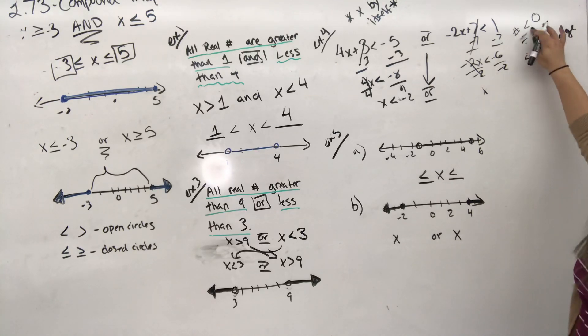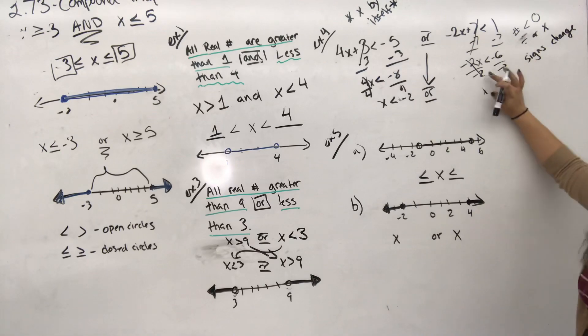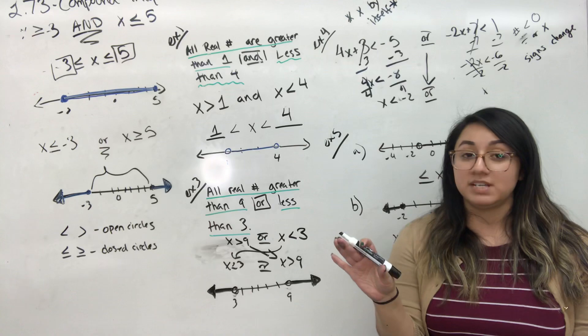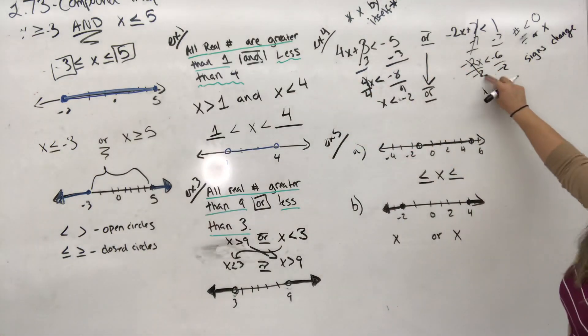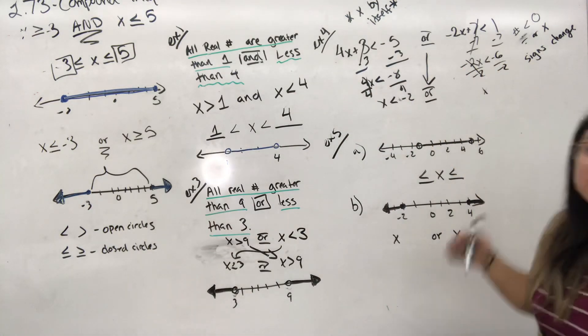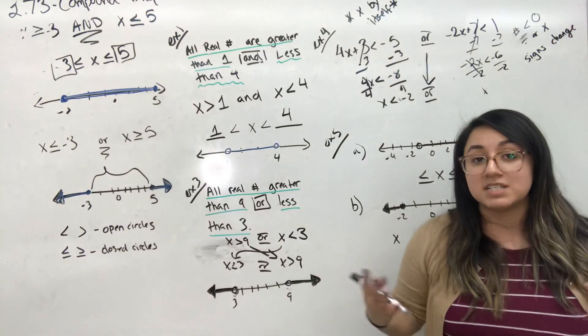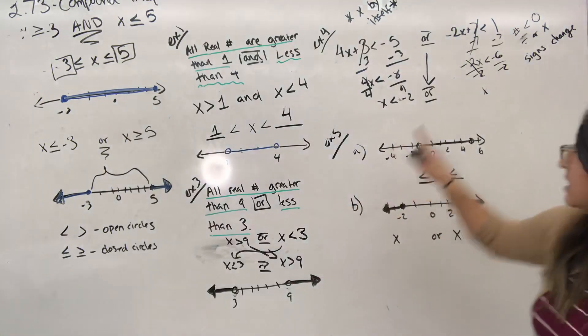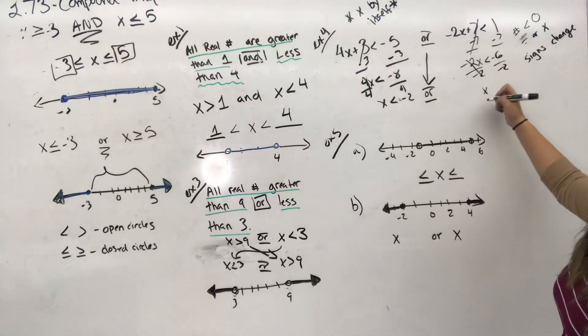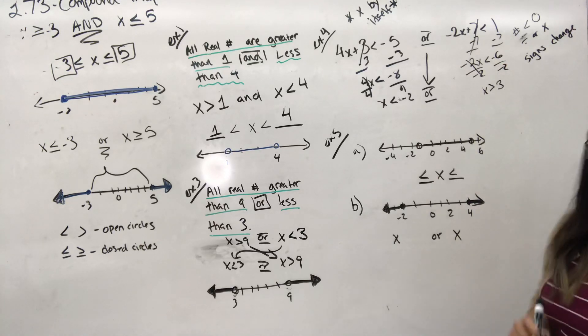So if a number is less than 0 and you're multiplying or dividing to both sides, not adding or subtracting. Adding or subtracting are two completely different things. But when you're multiplying or dividing both sides and it's a negative number, so a number less than 0 is anything negative, that means your signs change. So now it's not going to be less than, it's going to be greater than negative 6 divided by negative 2, which is 3.